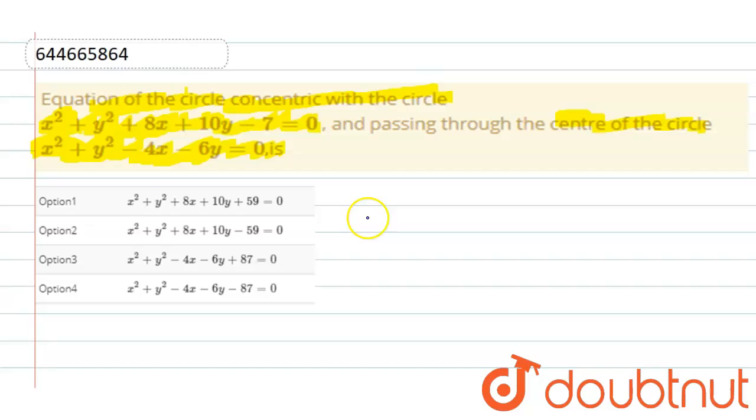The center of the circle x square plus y square minus 4x minus 6y equals 0 is at the point (2, 3).